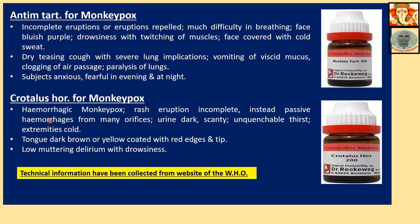Crotalus horridus for monkeypox: indicated in hemorrhagic monkeypox. Rash eruptions incomplete; instead, passive hemorrhages from many orifices of the body. Urine dark and scanty. Unquenchable thirst. Extremities cold. Tongue dark brown or yellow-coated with red edges and tip. Low muttering delirium with drowsiness.